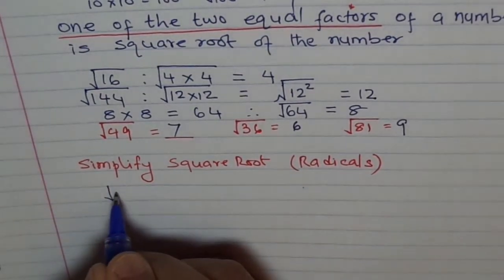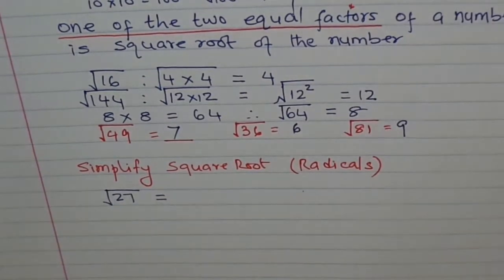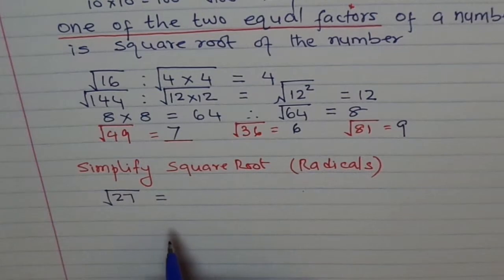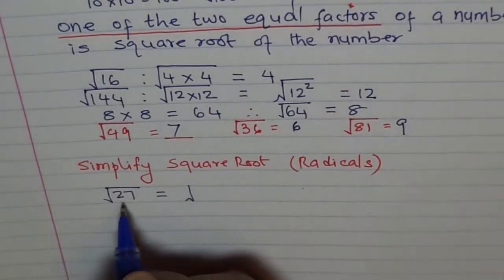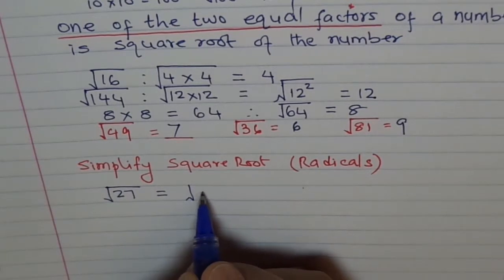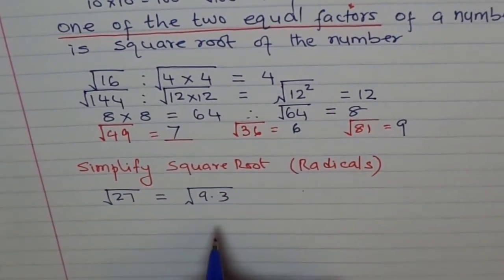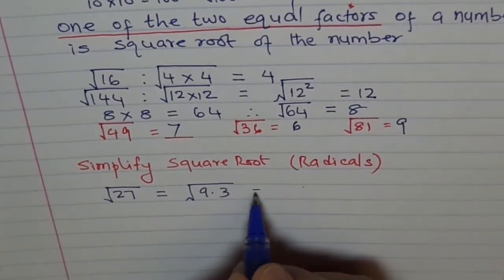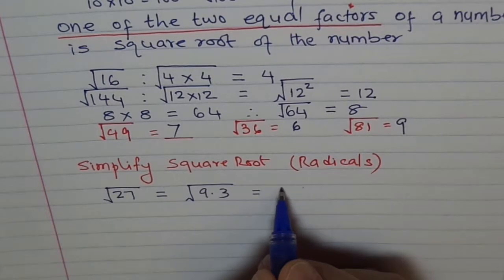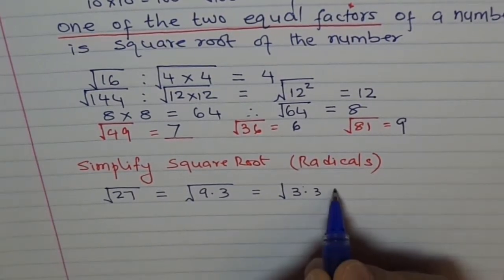Square root of 27 — what is it? There are no two equal numbers which when multiplied give us 27. But we know 27 can be 9 times 3. Now what is 9? I can write 9 as 3 times 3, and then we have another 3.